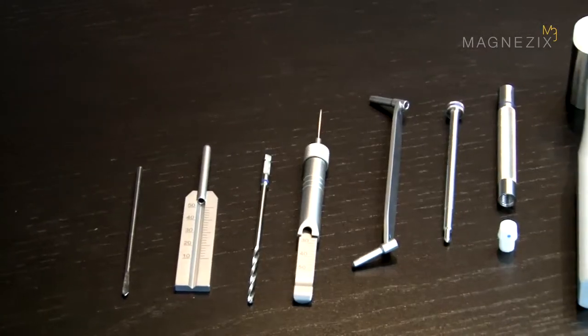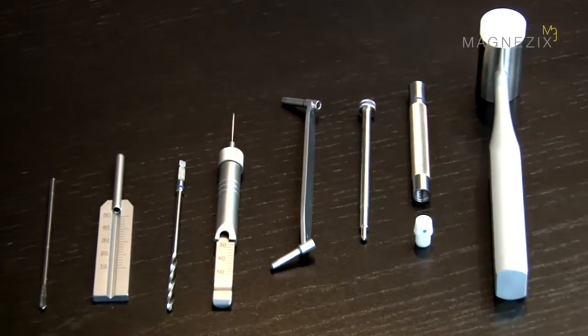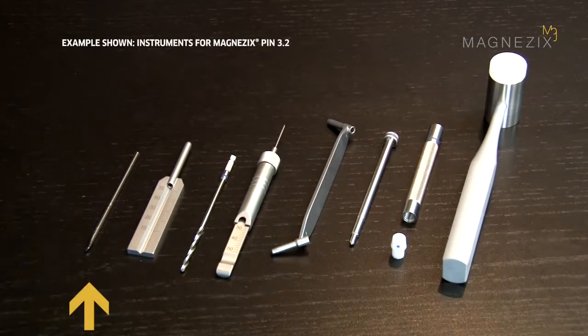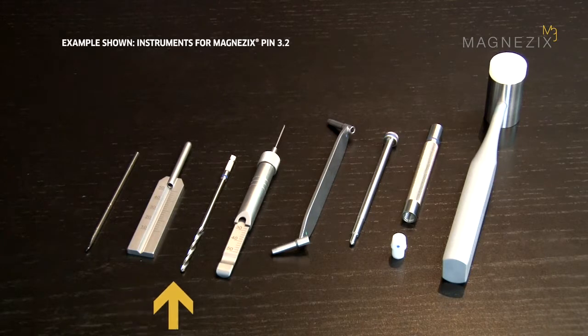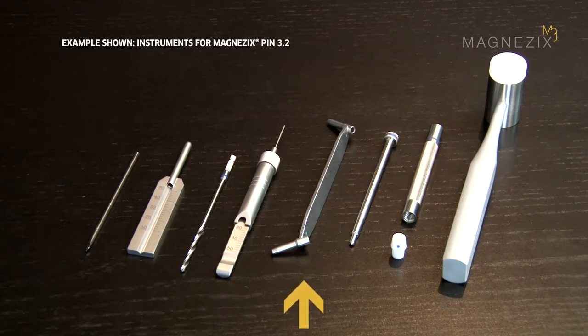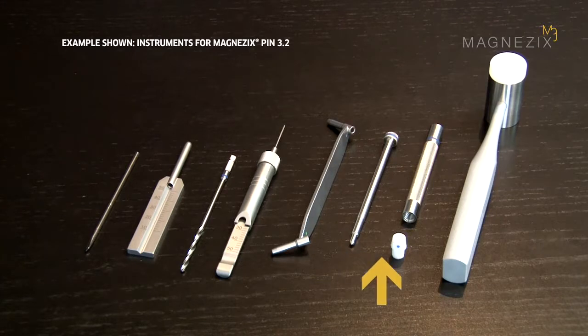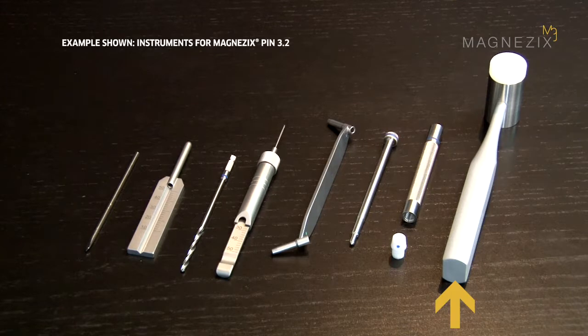You will need the following instruments to implant a Magnesix PIN 3.2: a 3.2 mm reduction wire, the measuring device, a 3.2 mm drill bit, the depth gauge, a double drill guide, the impactor with sleeve, insert and screwing tip, and the optional hammer with plastic insert.